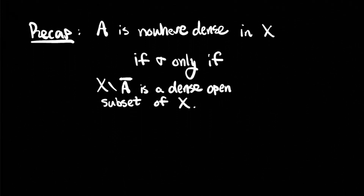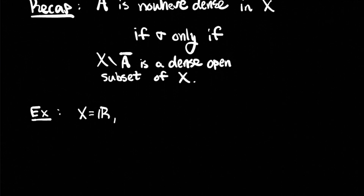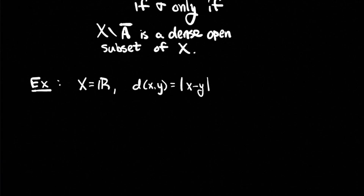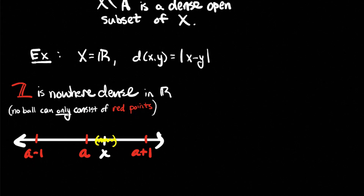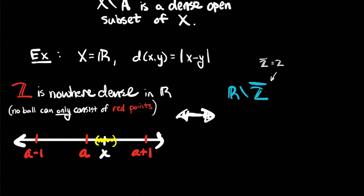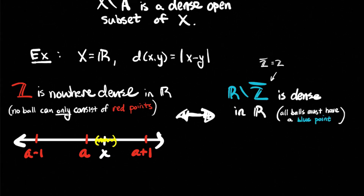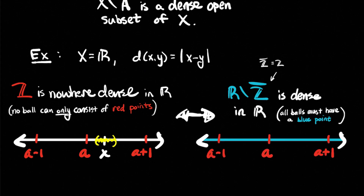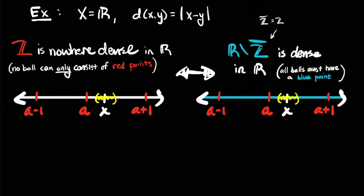So to recap: A is nowhere dense in X is equivalent to saying that the complement of the closure of A is a dense open set of X. As an example, the integers were a nowhere dense subset of the real line because no ball can consist only of integer points. Equivalently, the set of non-integers is a dense subset of the real line — all balls must have a non-integer point. These two pictures communicate an equivalent idea.